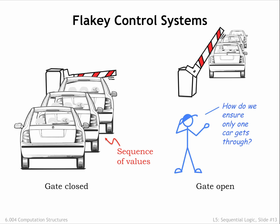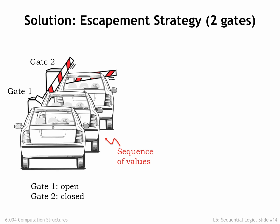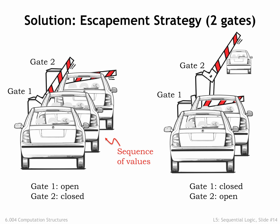So how do we ensure only one car makes it through the gate? One solution is to use two gates. Initially gate 1 is open, allowing exactly one car to enter the tollbooth, and gate 2 is closed. Then, at a particular point in time, we close gate 1 while opening gate 2. This lets the car in the tollbooth proceed on, but prevents any other car from passing through. We can repeat this two-step process to deal with each car one at a time. The key is that at no time is there a path through both gates. This is the same arrangement as the escapement mechanism in a mechanical clock, which ensures the gear advances only one tooth at a time, preventing the spring from spinning the gear wildly.